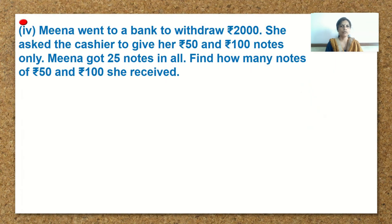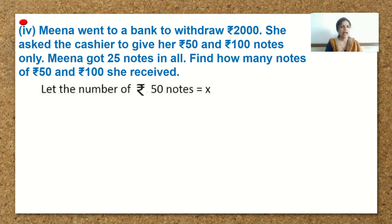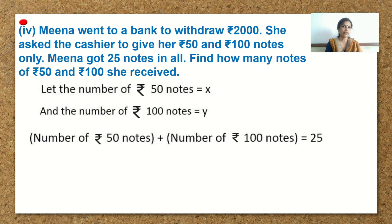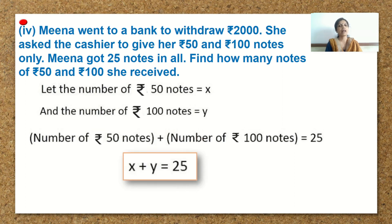This is question number 4 from exercise 3.4. Meena went to a bank to withdraw Rs. 2000. She asked the cashier to give her Rs. 50 and Rs. 100 notes only. Meena got 25 notes in all. Find how many notes of Rs. 50 and Rs. 100 she received. We consider the number of Rs. 50 notes as x and the number of Rs. 100 notes as y. Since the total number of notes is 25, we write x plus y is equal to 25 as equation 1.